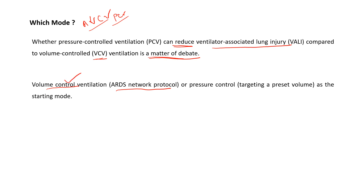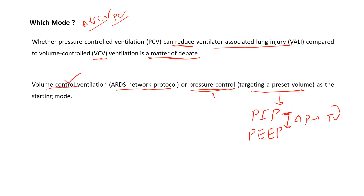The ARDS Network protocol uses volume control ventilation. If using pressure control ventilation, always target a preset volume based on PIP and PEEP — the pressure gradient determines tidal volume, so always monitor tidal volume. If the patient is improving, decrease the PIP and maintain tidal volume of at least 6 ml/kg. Pressure control mode offers better patient synchrony due to initial high flow, but tidal volume must be strictly monitored by adjusting PIP.